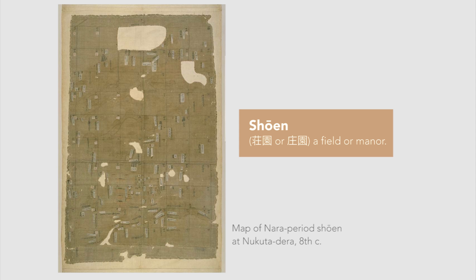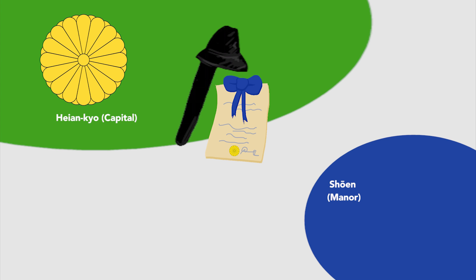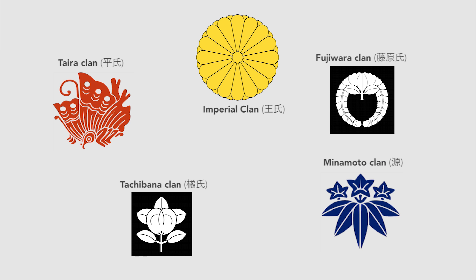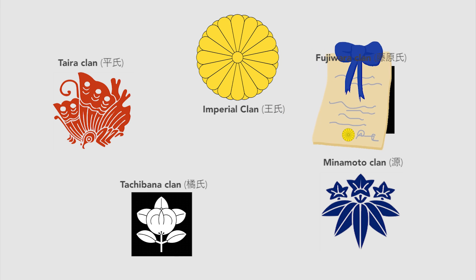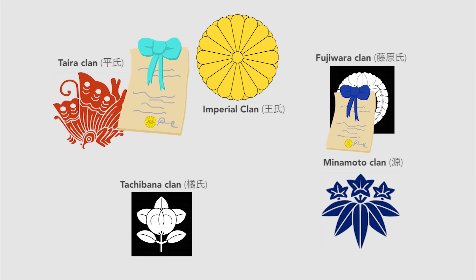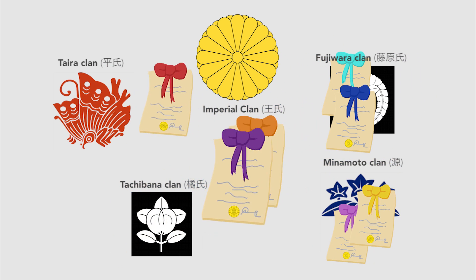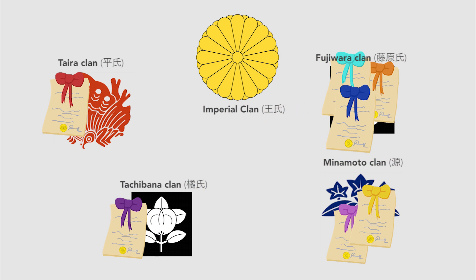Powerful clan leaders and Buddhist temples also pressured the emperor to have their Shōen, or estate taxes, exempt. The Shōen landowners stayed close to the capital, while affairs were increasingly left to local estate managers. Under these managers were peasant farmers who worked their land more or less as bonded serfs. As landholdings were originally imperial gifts and changed hands with intermarriage and inheritance, the Fujiwara carefully maneuvered control over the best sources of revenue at the time.